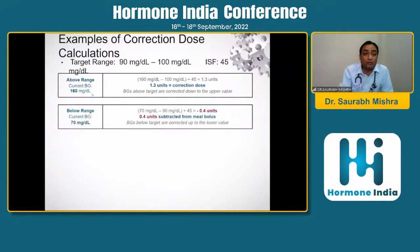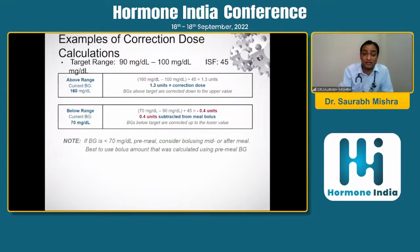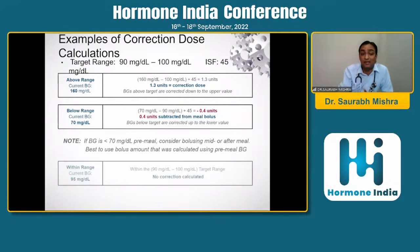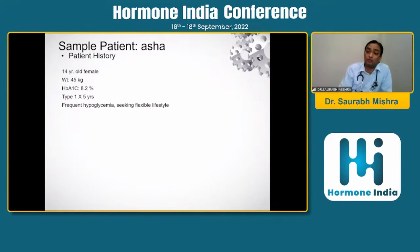For above-range corrections: if blood glucose is 160, a correction of 1.3 units is given. For below-range: if blood glucose is 70, subtract 0.4 units from the meal bolus. If blood glucose goes low, manage hypoglycemia sincerely — do not replace it with any carbohydrate other than glucose; treat only with glucose.